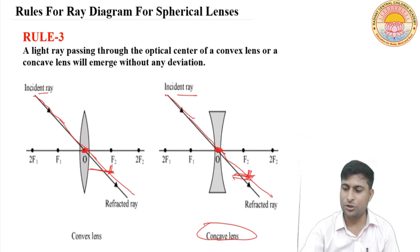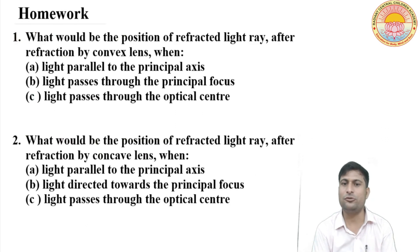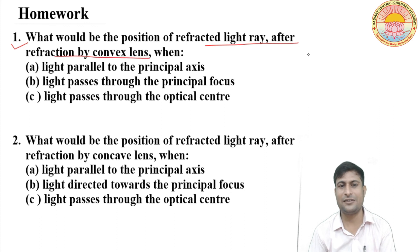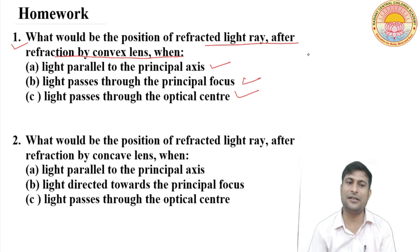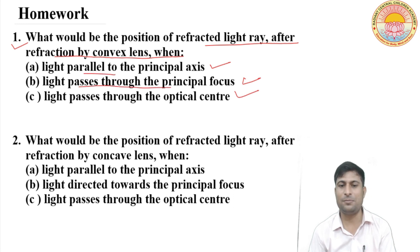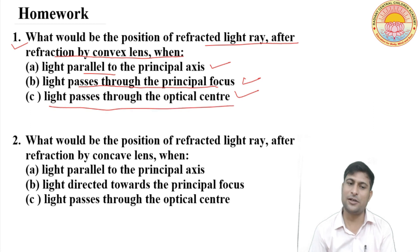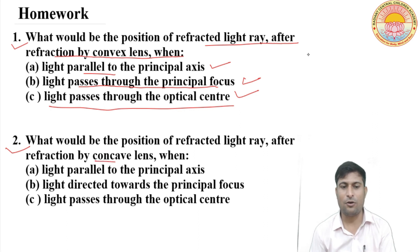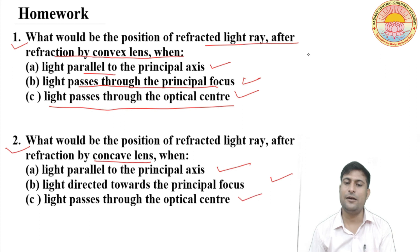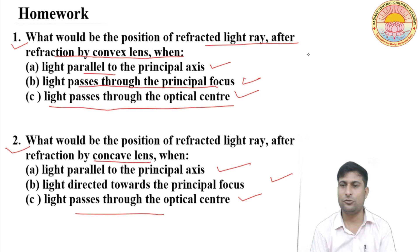Now some questions are here on the basis of this. What would be the position of the refracted light ray after refraction by a convex lens? Recall the rules: when a light ray goes parallel, it passes through the principal focus; when it passes through the optical center it goes straight. The same question is asked for the concave lens: what would be the position of the light ray after refraction by a concave lens when a parallel ray hits it? You can ask me by posting a comment.